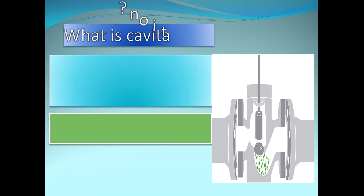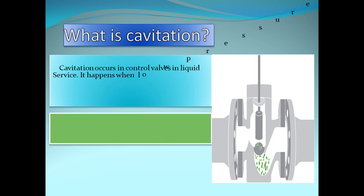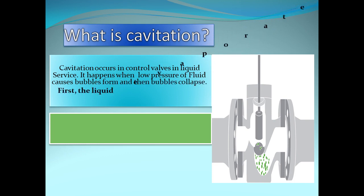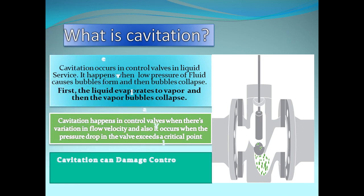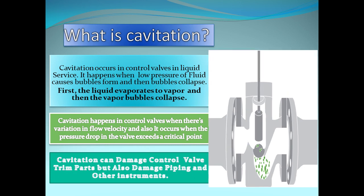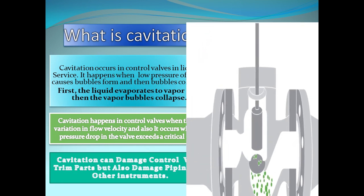What is Cavitation? Cavitation occurs in control valves in liquid service. It happens when low pressure of fluid causes bubbles to form and then bubbles collapse. First the liquid evaporates to vapor and then the vapor bubbles collapse. Cavitation happens in control valves when there are variations in flow velocity and also occurs when the pressure drop in the valve exceeds a critical point. Cavitation can damage control valve trim parts but also damage piping and other instruments.